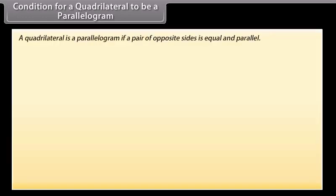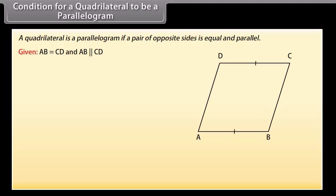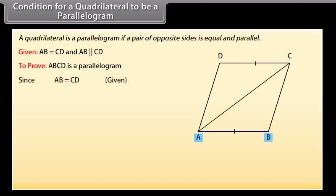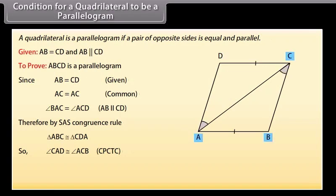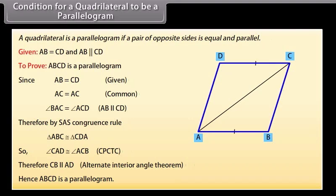Condition for a quadrilateral to be a parallelogram: A quadrilateral is a parallelogram if a pair of opposite sides is equal and parallel. Given AB = CD and AB is parallel to CD, we draw diagonal AC. Since AB = CD (given), AC = AC (common), and angle BAC = angle ACD (alternate angles, AB ∥ CD), by SAS congruence rule, triangle ABC is congruent to triangle CDA. So angle CAD = angle ACB, therefore CB is parallel to AD. Hence ABCD is a parallelogram.